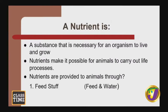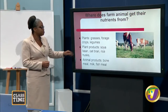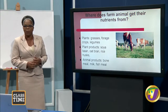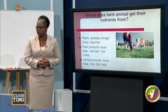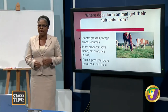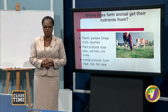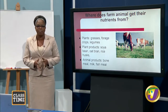A nutrient is a substance that is necessary for an organism to live and grow. Nutrients make it possible for animals to carry out life processes, and nutrients are provided to animals through feedstuff, which includes feed and water. Animals get their nutrients from plants, plant products, and also from animal products.